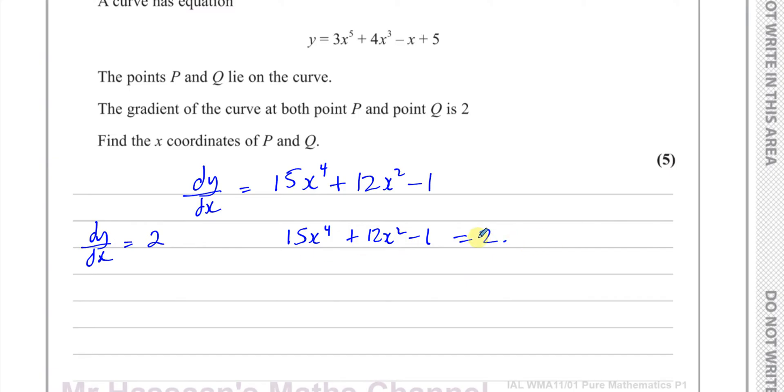Now what we'll notice here is this is what's called a disguised quadratic. It's a quartic equation with x to the power of 4, but we notice that the other term is x to the power of 2, and we know that x to the power of 4 is the same as x to the power of 2 squared. Whenever you see something like that, this is called a disguised quadratic. So we can actually solve this. First of all let's get it ready by equating it to 0. We're going to subtract 2 from both sides: 15x to the power of 4 plus 12x squared minus 3 equals 0.